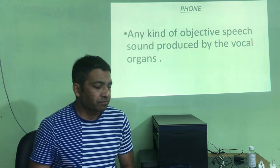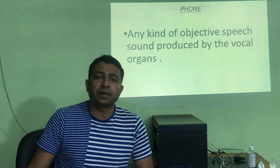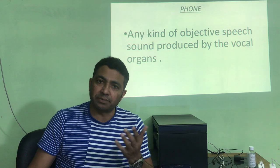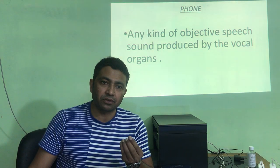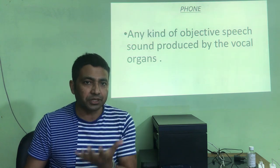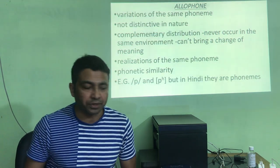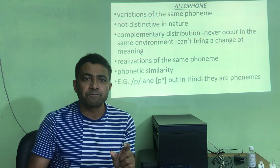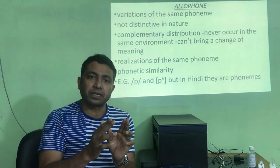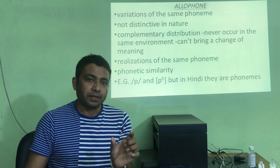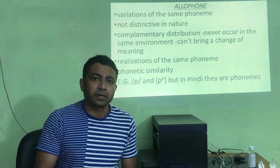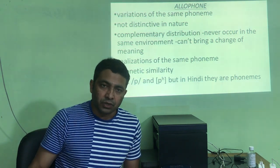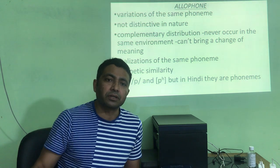What is a phone? A phone is any sound that your articulators can produce. This sound may or may not exist in a particular language — it may even be a nonsense utterance — but any utterance by your articulators is called a phone. An allophone is a variant of the same phoneme. If you have a phoneme like /p/, its variants — the different avatars of the same /p/ used in different environments — are called allophones.